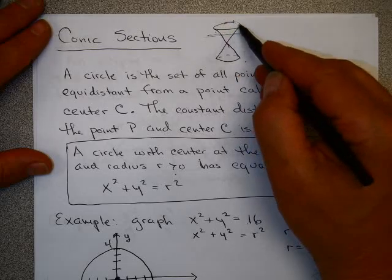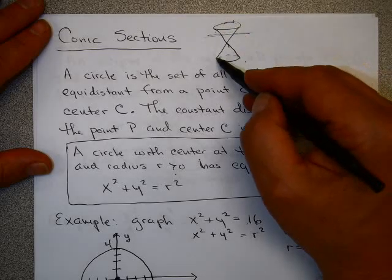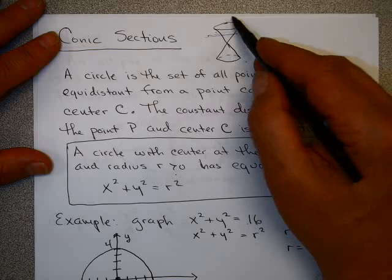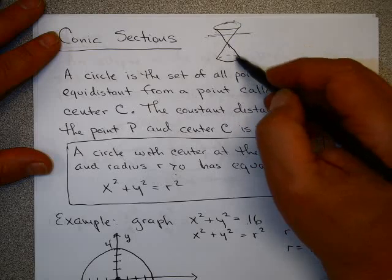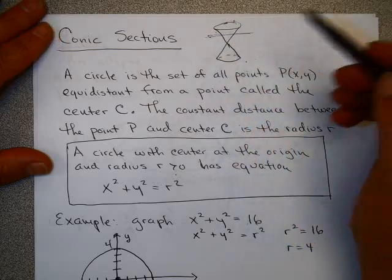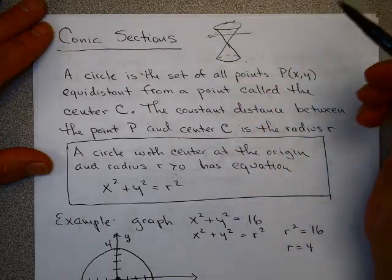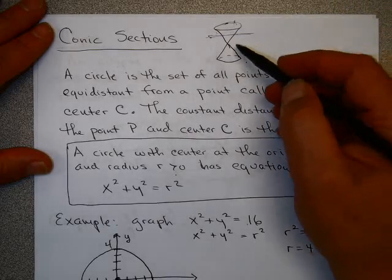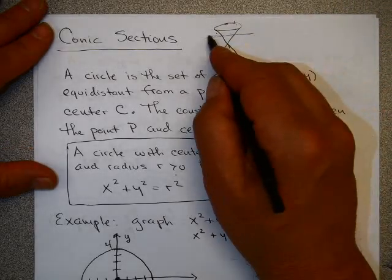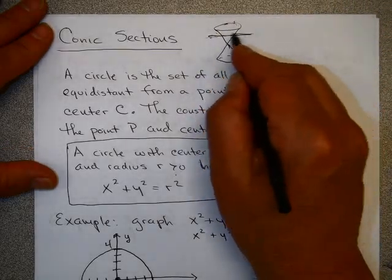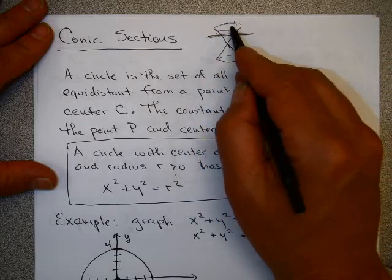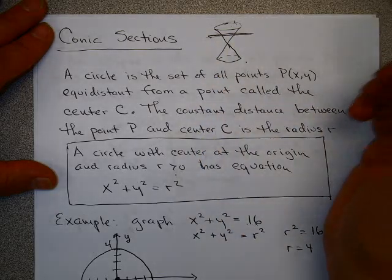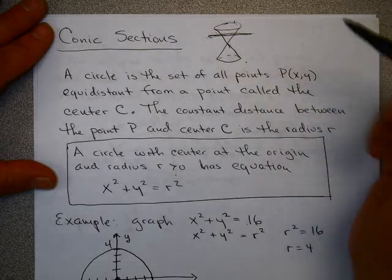A conic section basically means we have these two cones kind of on top of each other, and if you cut the cone with a plane, it creates something called a conic section. It turns out there are four of these, the first one being a circle, where we cut the cone with a plane parallel to the base of the cone.